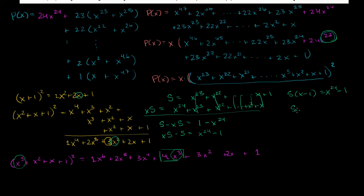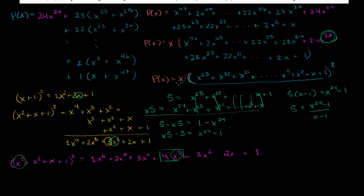So the sum s equals x to the 24th minus 1 over x minus 1. This whole part in blue can be rewritten as x to the 24th minus 1 over x minus 1. Now, what we really care about for this problem is to figure out the roots whose squares have complex parts. We already know that one of the roots is 0.